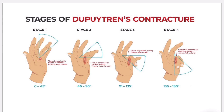In the initial stage, there is approximately 45 degrees of bending in the ring finger, starting with tissues beneath the skin thickening to form small nodules. Gradually, the tissue continues to thicken, pulling fingers closer to the palm, and the bending increases to about 90 degrees. Further progression increases flexion from 90 to 135 degrees, and you can see the cord has fully formed, pulling the fingers even closer.